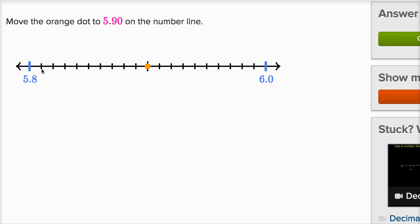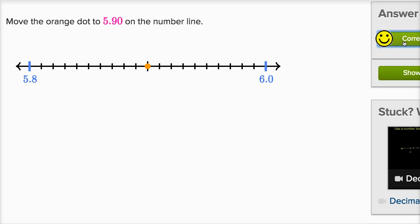So for example this would be 5.81, 5.82, 5.83, 5.84, 5.85, 5.86, 5.87, 5.88, 5.89, 5.90. So either way, I think we got it. Alright, let's keep doing some more of these.